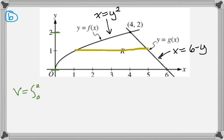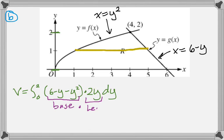And base times height. So the base is in the region R. So that's going to be right take away left. So the right curve is 6 minus y, and then take away the left curve is y squared. And then I have to multiply by the height. And we're just told in the problem that the height is 2y. So that's just going to be times 2y and then dy. And there's your base, there's your height.